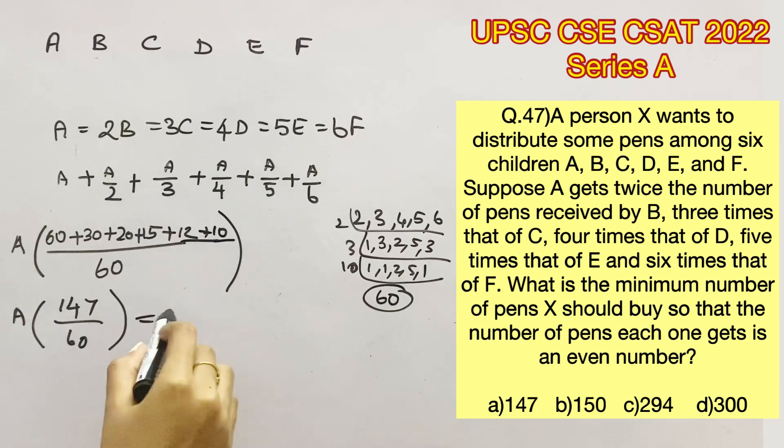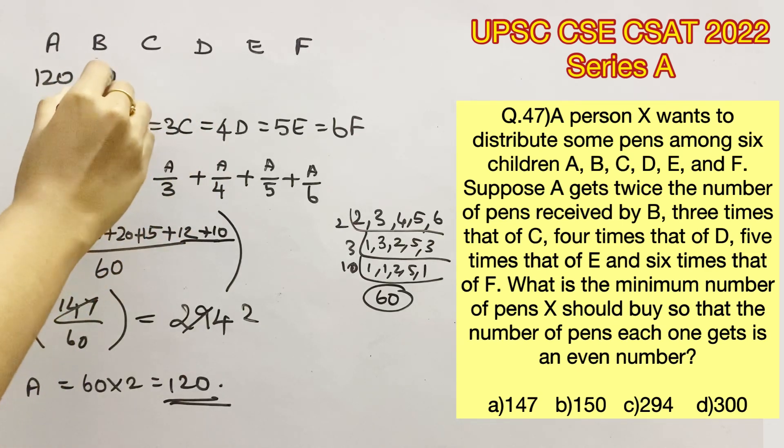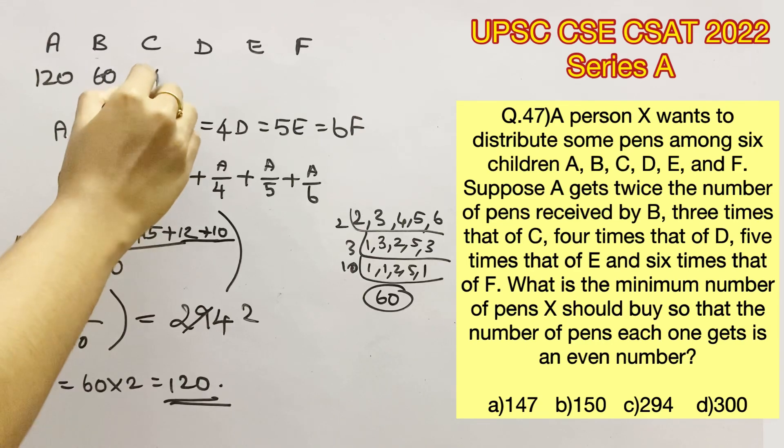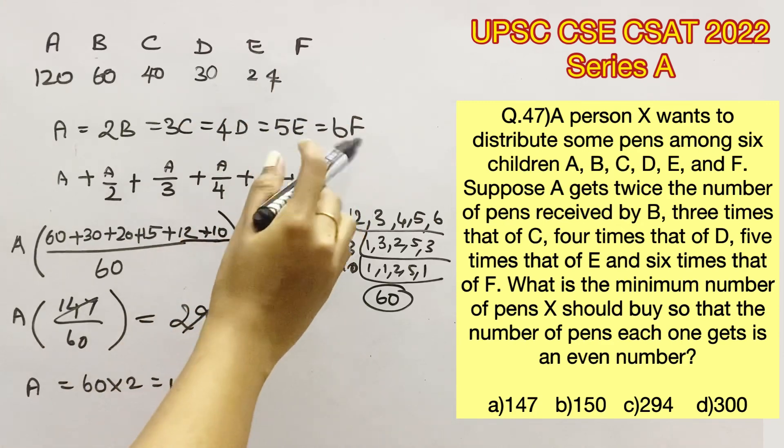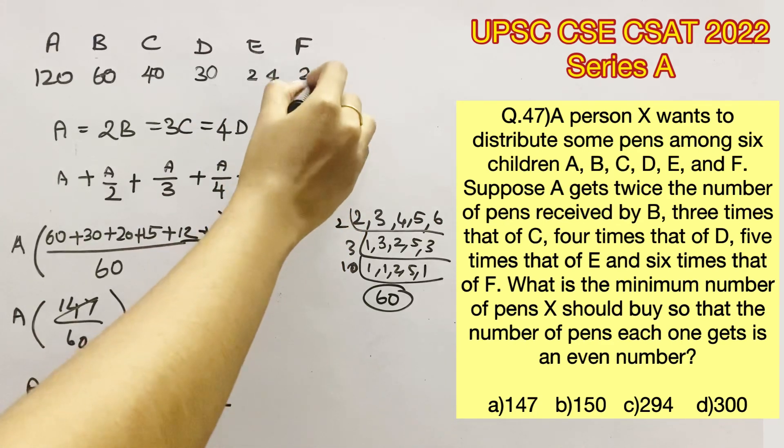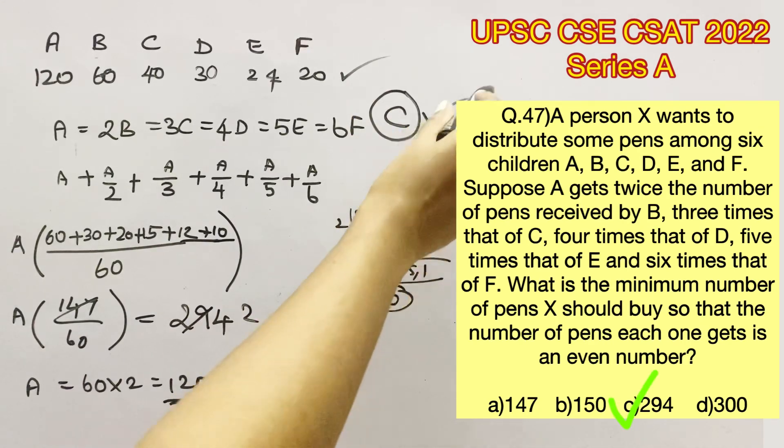Now let's check it with 294. Now we know that 147 into 2 is 294. So A will become 60 into 2, which is 120. Let's substitute this value throughout and check. A is 120. B will be 120 by 2, which is 60. C will be 120 by 3, which is 40. D will be 120 by 4, which is 30. E will be 120 by 5, which is 24. F will be 120 by 6, which is 20. If you see, all the values are even. Therefore, option C is the right answer. Thank you.